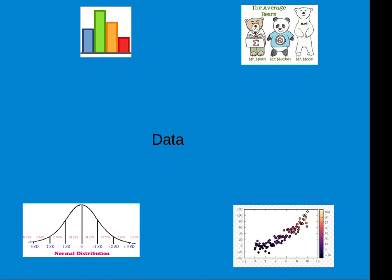We first looked at data in graphical displays and charts, like stem and leaf, bar chart, Pareto chart, and histogram, and others. Then we talked about summarizing data using numbers, such as mean, median, and mode, standard deviation, IQR, and range.